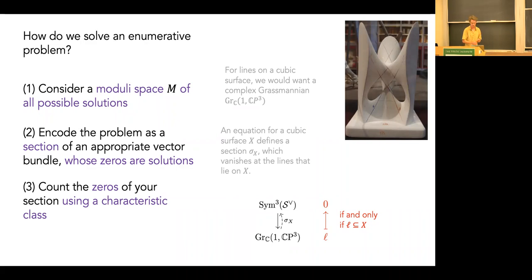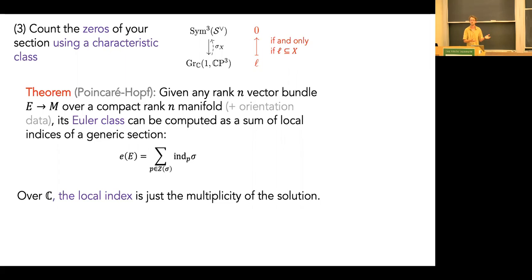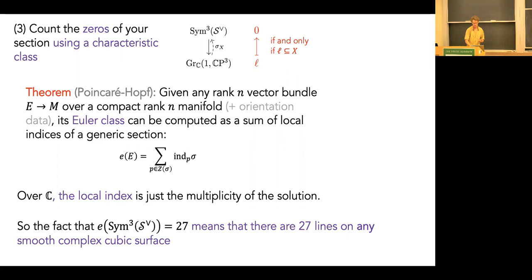For this last example we use the theorem of Poincaré–Hopf: if I have a rank-n vector bundle over a compact rank-n manifold with orientation data, I can compute its Euler class as a sum of local indices of a generic section. Over the complex numbers, this local index is just the multiplicity of the solution. So this reduces to a Chern class computation: the Euler class of this bundle over the Grassmannian spits out 27, meaning 27 lines counted with multiplicity. The Euler class didn't depend on the section, which says the count doesn't depend on the choice of cubic surface.